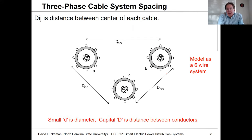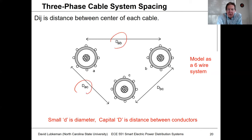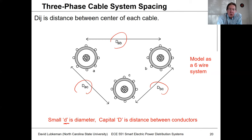For multi-cable systems, we'll mostly be talking about three-cable systems for three phase. You'll simply have three concentric neutrals, and depending on the arrangement — horizontally or in conduit — what we're concerned about is the distances between cables: D_AB, D_AC, and D_BC. Note that a small 'd' is a diameter for an individual cable, while a large 'D' is typically used for distance between conductors.